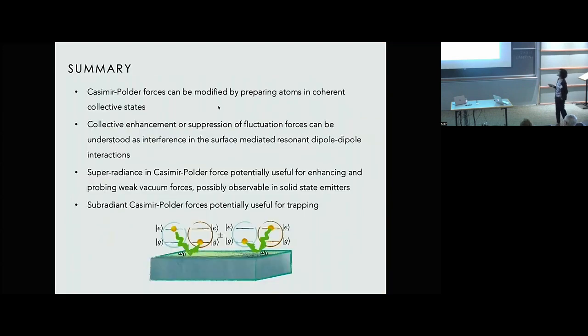All right, so to summarize what I've told you so far, we have shown that there are collective effects in Casimir-Polder forces. And this is something we can understand as an interference in the surface mediated dipole-dipole interactions. And potentially super radiant Casimir-Polder forces could be useful for enhancing and probing otherwise weak vacuum effects. And sub radiant Casimir-Polder forces could be potentially useful for trapping particles near surfaces.